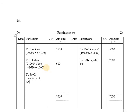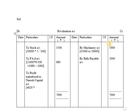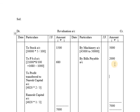Who are the old partners? Naresh and Ramesh. The profit sharing ratio is 2:1, so 2 plus 1 equals 3. Whatever amount is to be divided, it is divided as 2/3 for Naresh and 1/3 for Ramesh. So Naresh's share is 4,820 into 2 divided by 3, and Ramesh's share is 4,820 into 1 divided by 3.